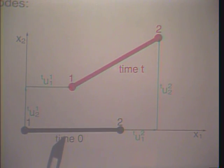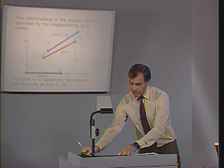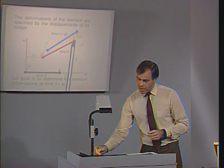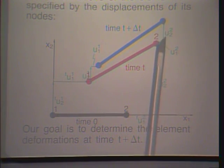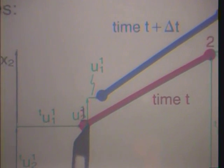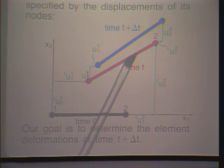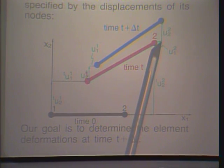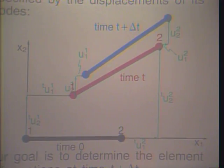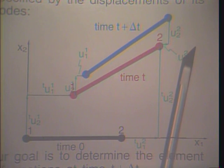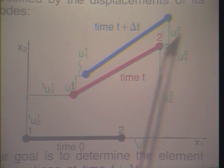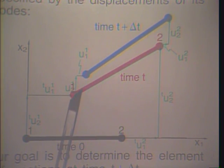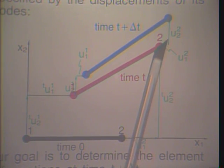This gives the deformation from time 0 to time t via nodal point displacements. From time t to time t plus delta t, we obtain an additional deformation given by incremental displacements at nodes 1 and 2 — the truss moves from the red configuration to the blue configuration. These displacements are measured in the stationary coordinate frame, which remains fixed while the elements move through it. We assume the configuration at time t is known and want to calculate the incremental displacements.